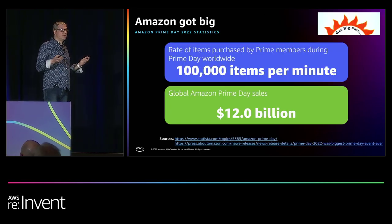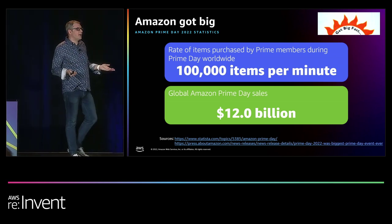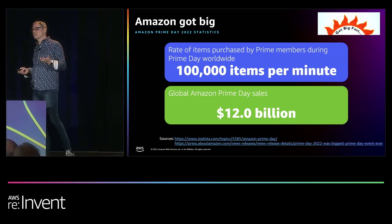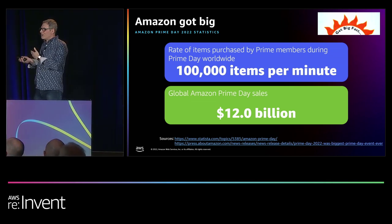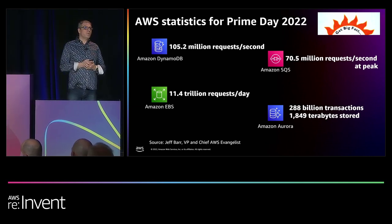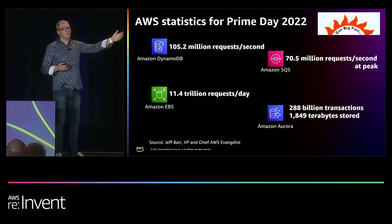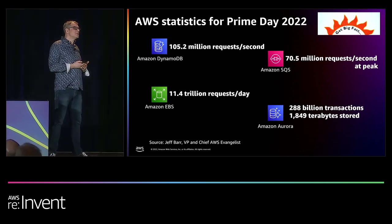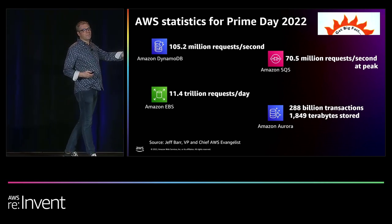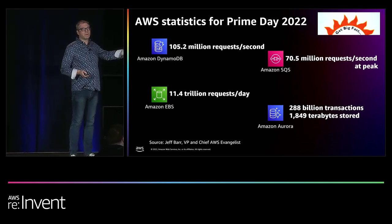Get big fast — fast forward to the present. The previous Prime Day, Amazon did get big: 100,000 items per minute, 12 billion in sales as of the last Prime Day. You're here to learn about how they're using AWS. There are obviously billions, trillions, and millions in the numbers. It just shows that Amazon did get big fast, and they're doing it using AWS — using AWS to scale reliably.